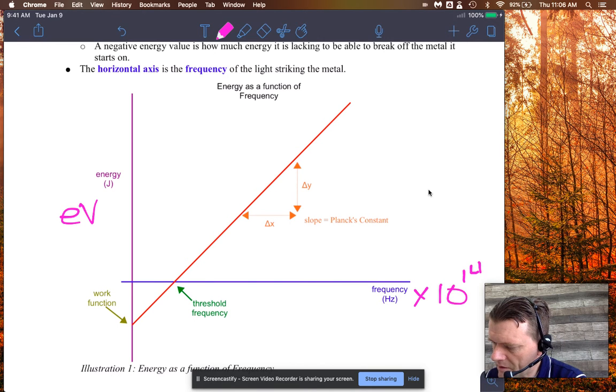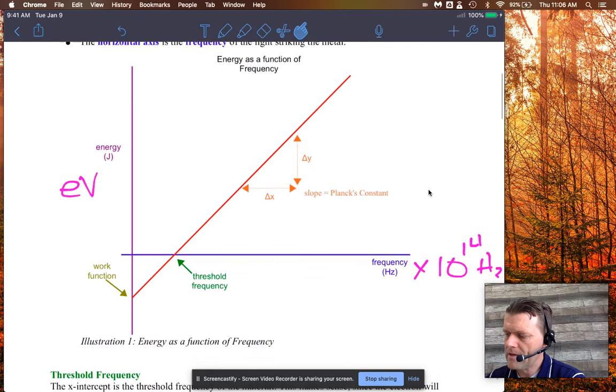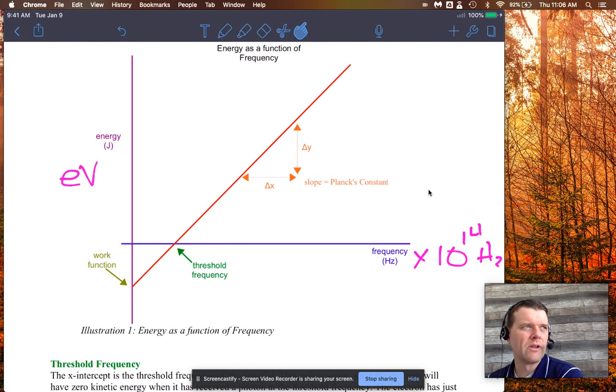Make sure you catch that. These are pretty high frequencies. We're dealing with typically mostly visible light, but then you get into, it's pretty rare that infrared actually works. It's usually visible light to ultraviolet and then onward is the range where Robert Milliken was getting evidence for the photoelectric effect.